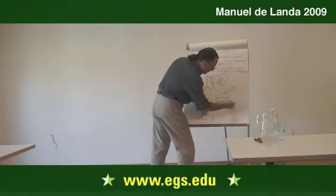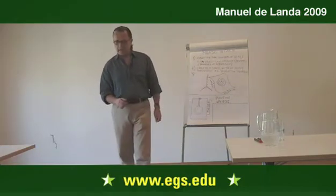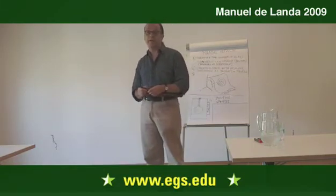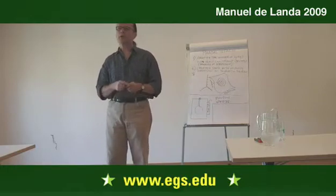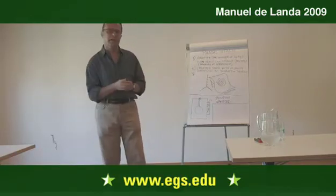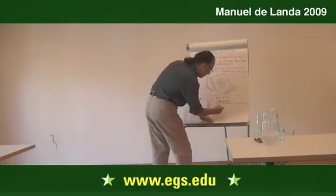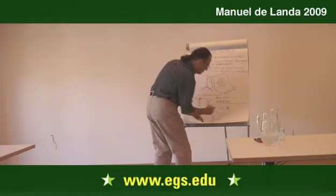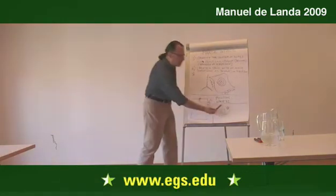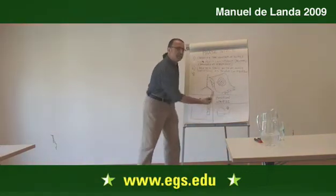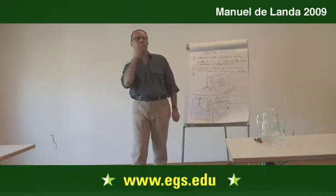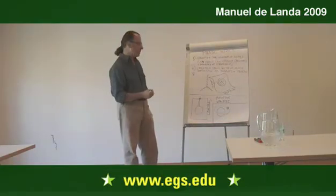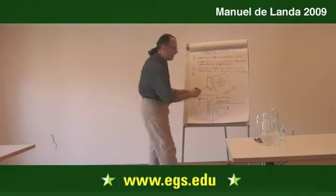In the 1890s, the Tsar of Russia in St. Petersburg offered a prize of a lot of money to whoever could solve a problem that had driven physicists crazy for the longest time. Physicists knew how — if this is the Sun and this is the Earth — since Newton, how to figure out how the Earth moves around the Sun. That is what made Newton famous: he discovered that the orbits were elliptical and had a particular radius.